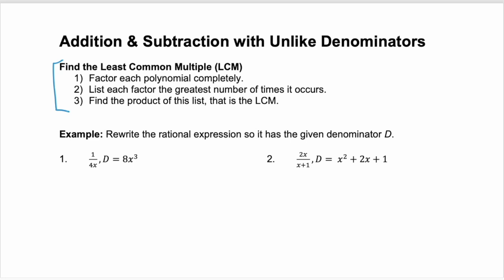Step one is to factor each polynomial. Step two, list each factor the greatest number of times it occurs. And then step three, find the product of that list, and you have your LCM — your least common multiple.